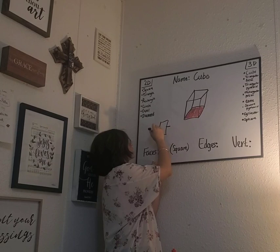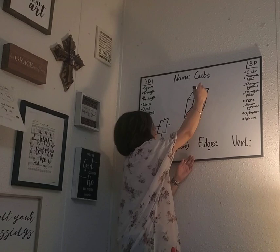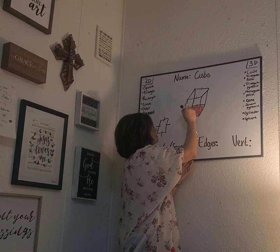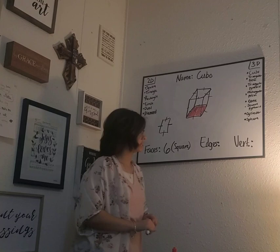Now let's go through edges. Edges are any of the parts that make straight lines in our shape. Let's count them on a cube — there are one, two, three, four, five, six, seven, eight, nine, ten, eleven, twelve edges in our cube. We'll go ahead and write that on our worksheet.